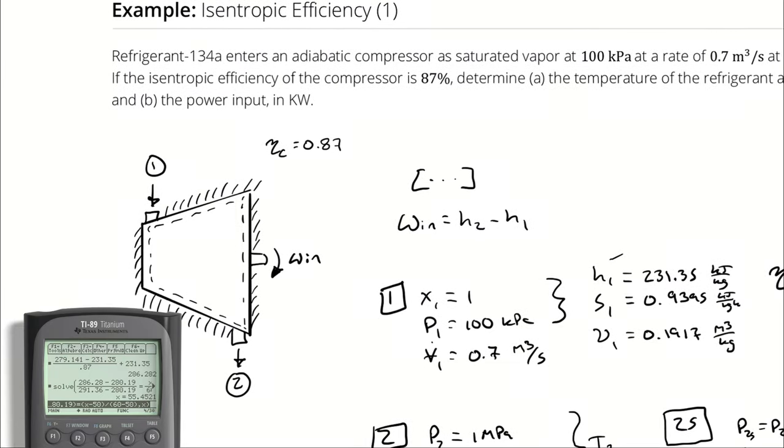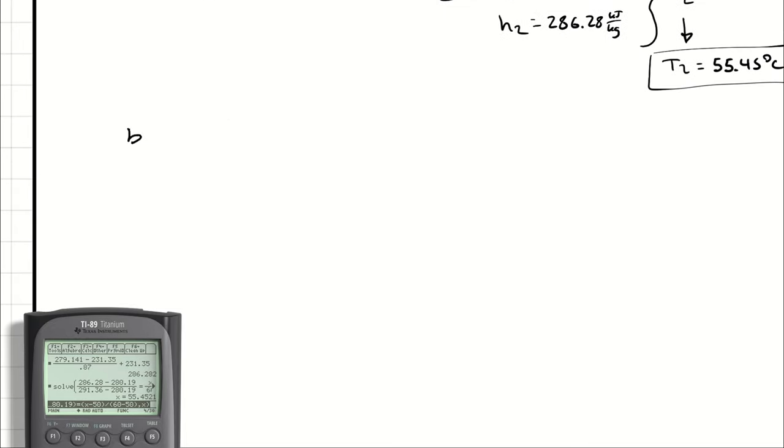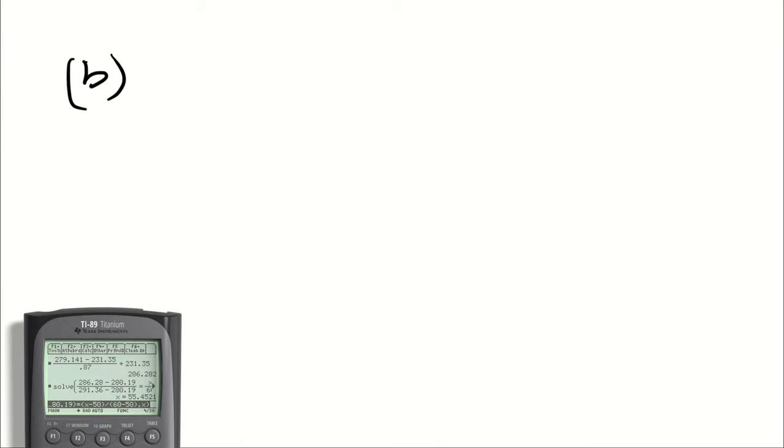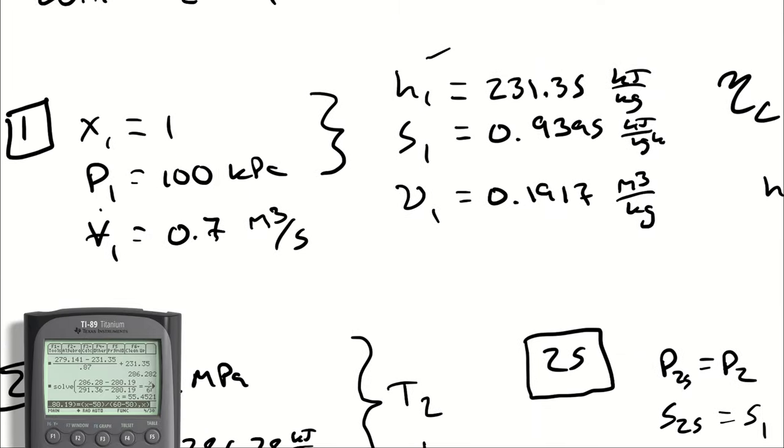The other aspect of the problem was, what is the required power input? Well, for that, I can set up a full energy balance, but we've done that on compressors a couple of times together, so we can now jump to the power input is equal to the mass flow rate times H2 minus H1, if I'm neglecting heat transfer. My mass flow rate can be determined because I know the specific volume and the total volume.